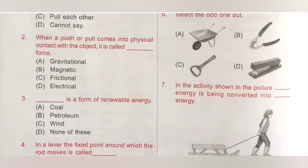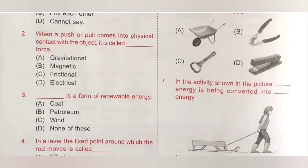Question 3: Dash is a form of renewable energy. Option A: Coal, B: Petroleum, C: Wind, D: None of these. Energy that can be renewed over a period of time is called renewable energy — examples: wind energy, solar energy, etc. So wind is a form of renewable energy. Option C is the correct answer.